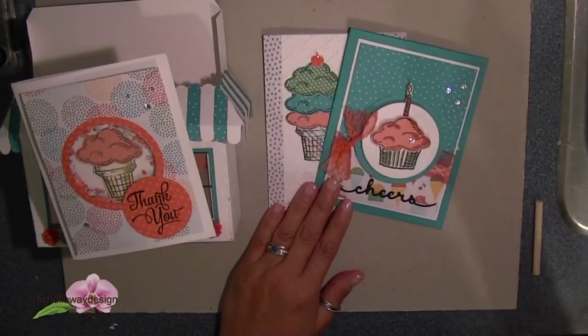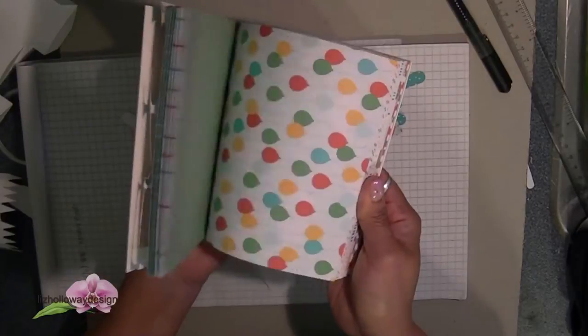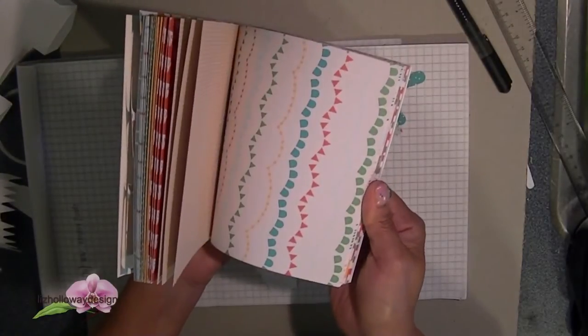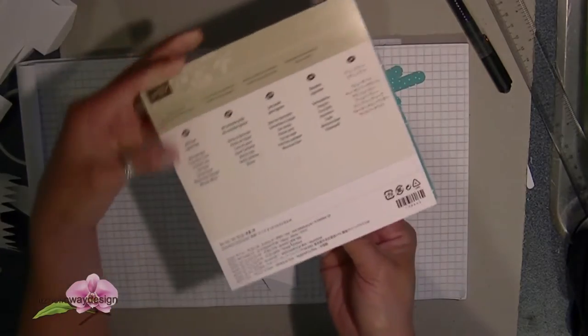A few weeks ago I received this brand new set called Sprinkles of Life from the new 2015-2016 catalog and I'm using the Cherry on Top Designer Series paper. This is a beautiful set of papers and I'm loving it. So let's get started.